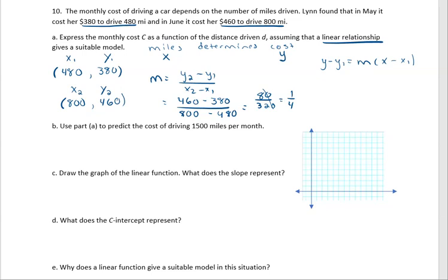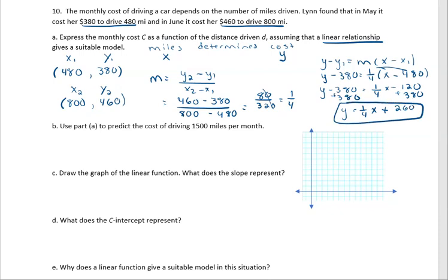Now we need to see if we can create an equation. So if we know that this is going to be linear, let's write our equation. Y minus Y1, well that becomes Y minus 380 equals M, which is one fourth, times X minus X1, which was 480. So we need to distribute. Y minus 380 equals one fourth X, and then one fourth times 480 is 120. Add our 380 to both sides, and it looks like we get Y equals one fourth X plus 260. So this is going to be our linear model.